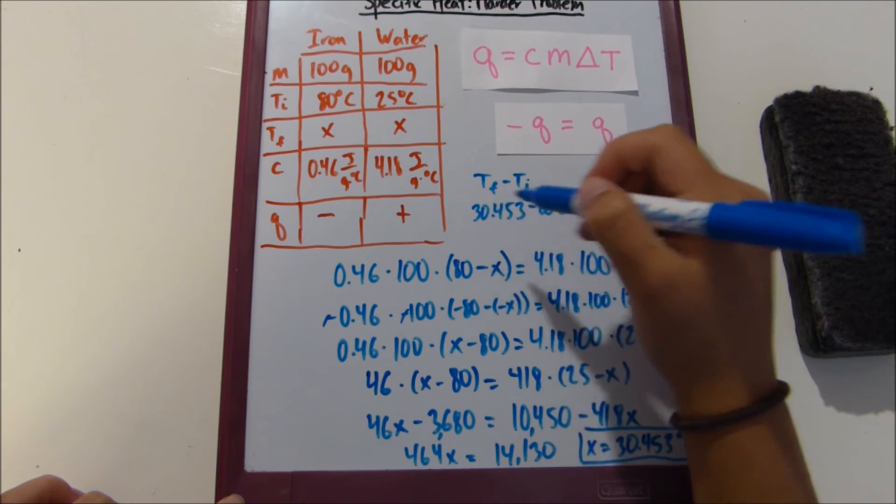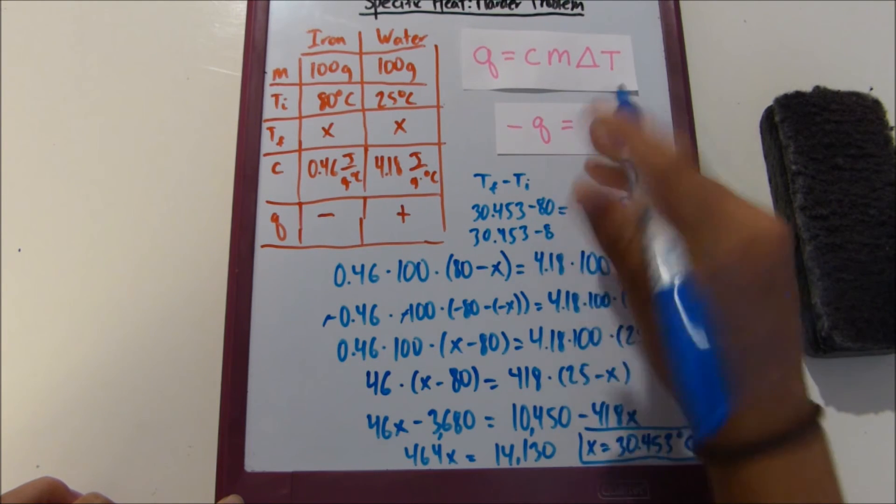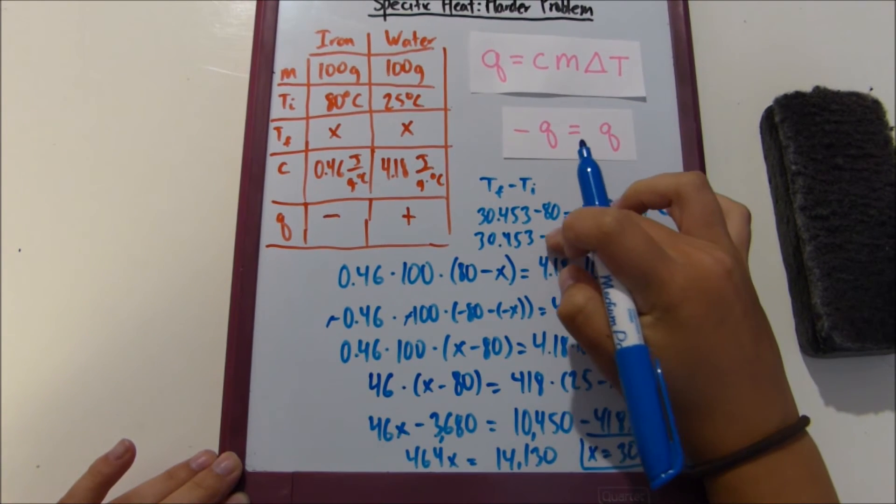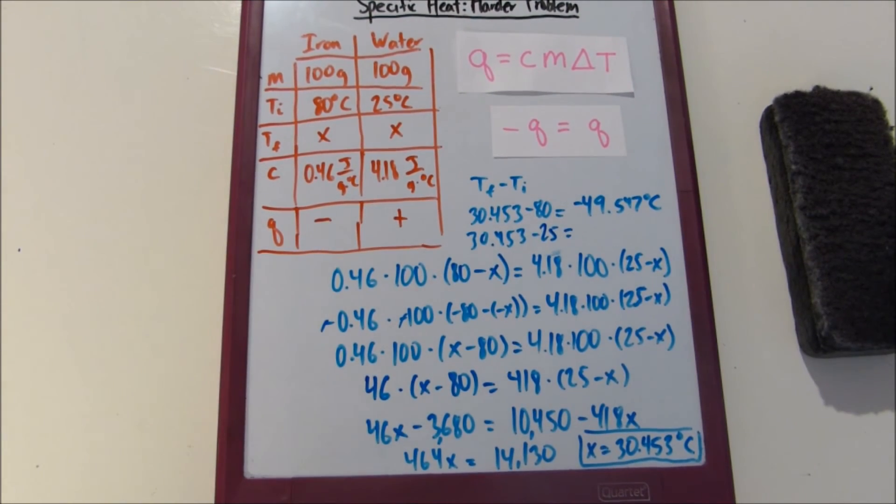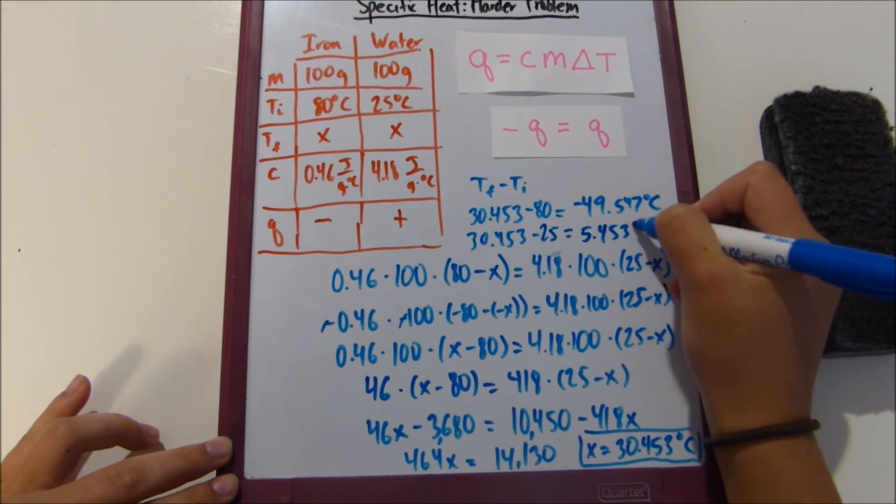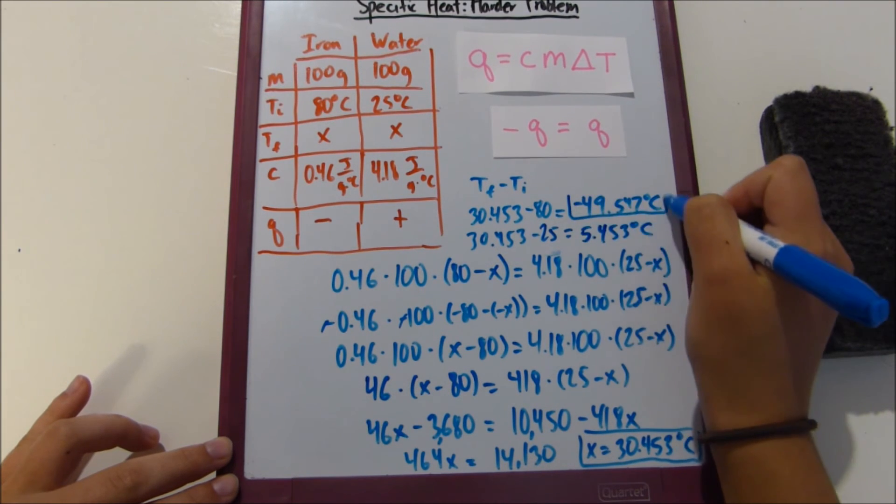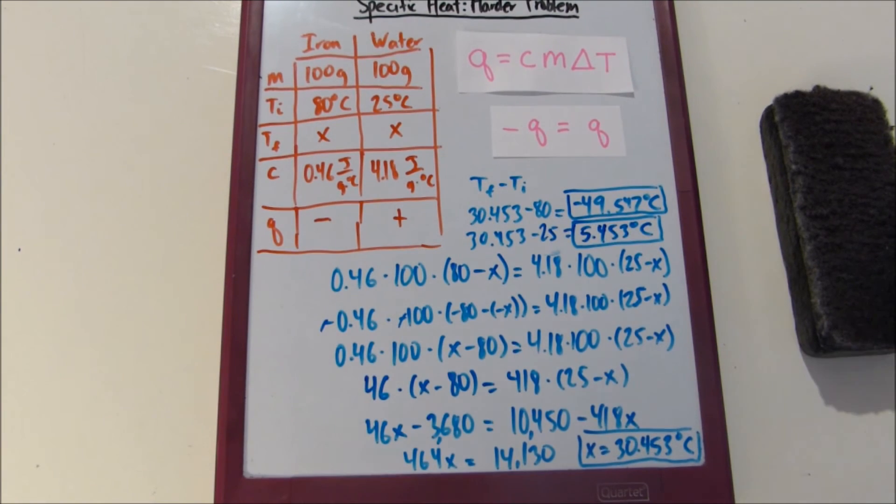And then for our water we had a final of 30.453 minus 25, which equals 5.453 degrees Celsius. So that is the second part of our problem.